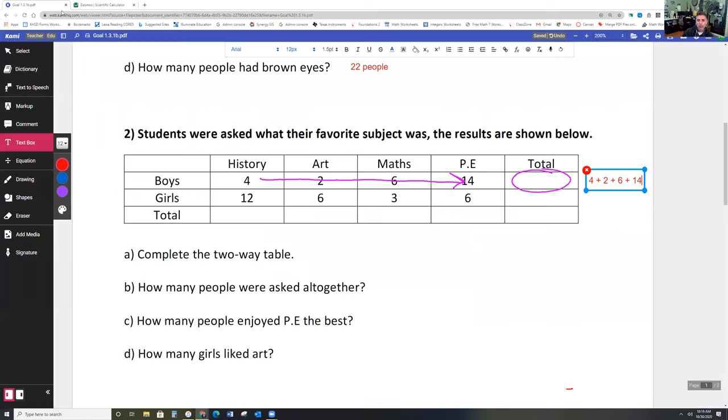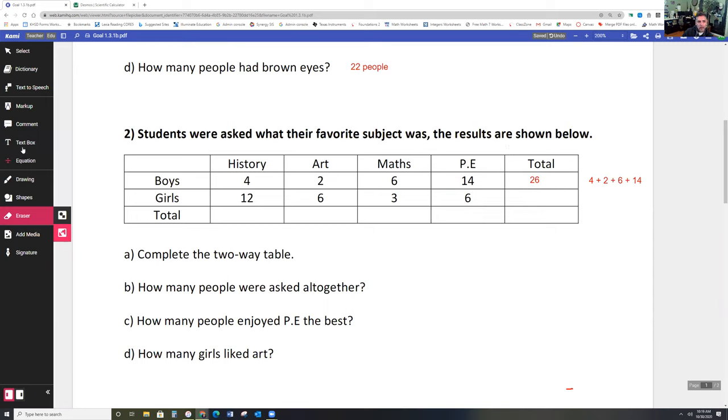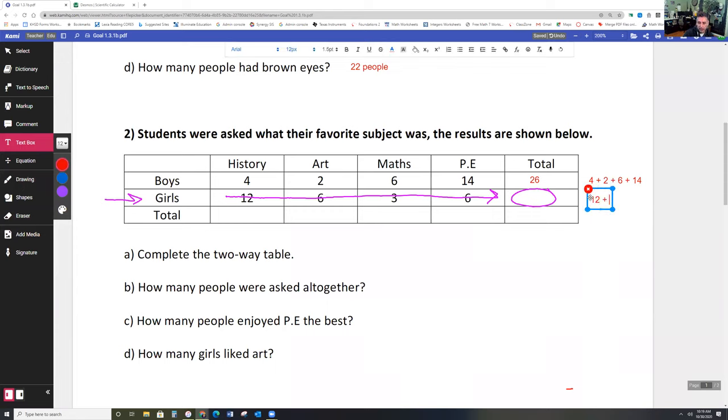When we add those, everybody saw that text box, boom, right here. My 6, many 6. Okay, and then we go to the next row, which is girls. Again, go all the way across, add the numbers that I come across to find the total. So that means I need to take the 12, add it with the 6, add it with the 3, add it with the last 6.